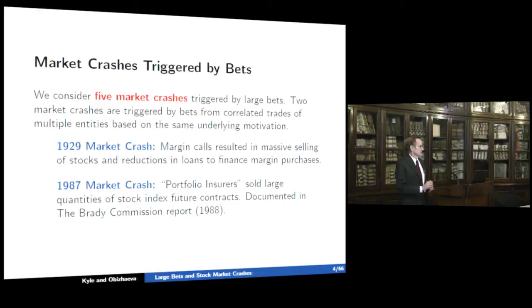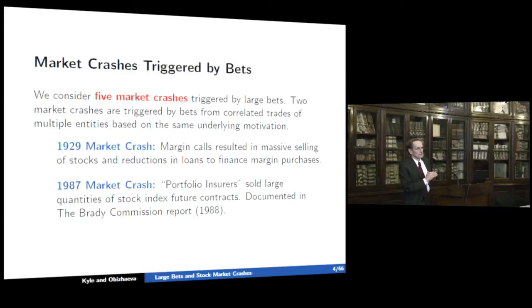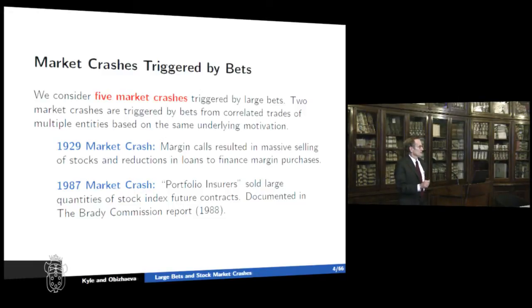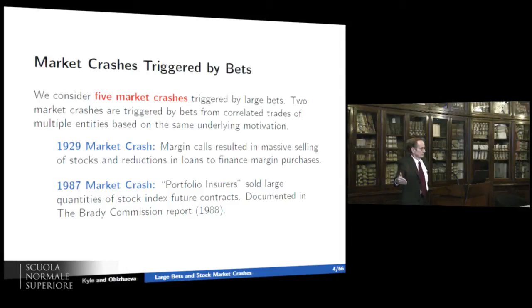In 1929, there was a lot of margin purchases of stock and substantial leverage in the market. That leverage largely unraveled over about five weeks — from the last week of October 1929 through the end of November — accompanied by a huge amount of selling and a very large decline in stock prices. It did not immediately result in the Great Depression, but it was a kind of signal. The Great Depression started a couple of years later and persisted through the 1930s.